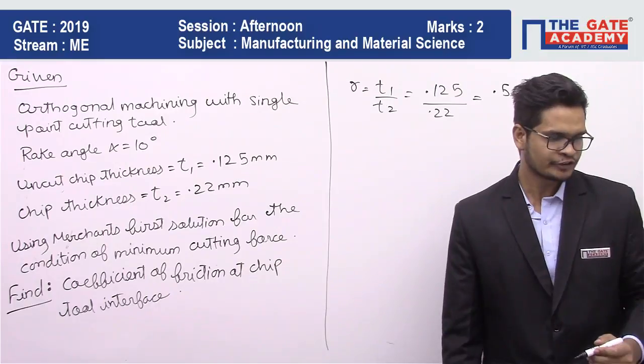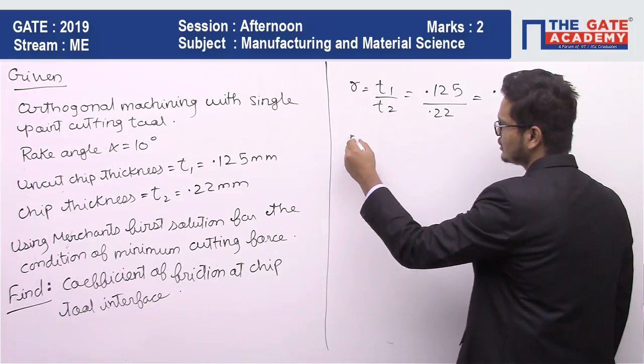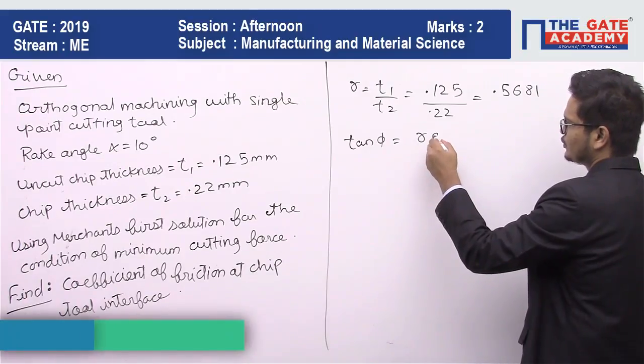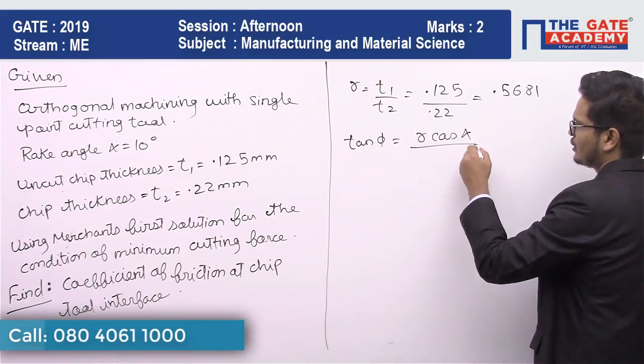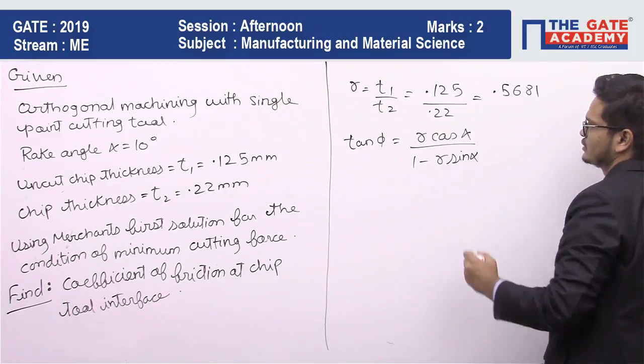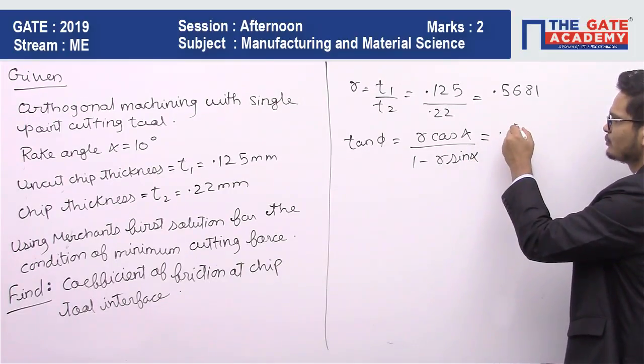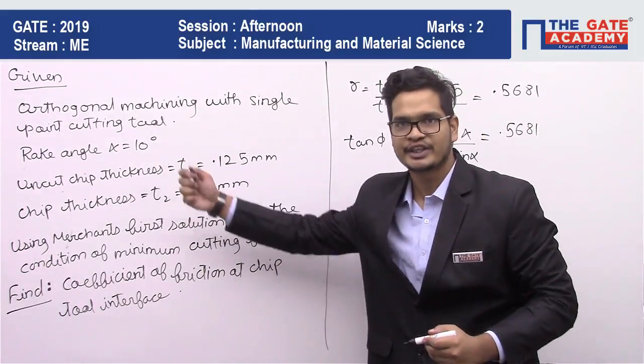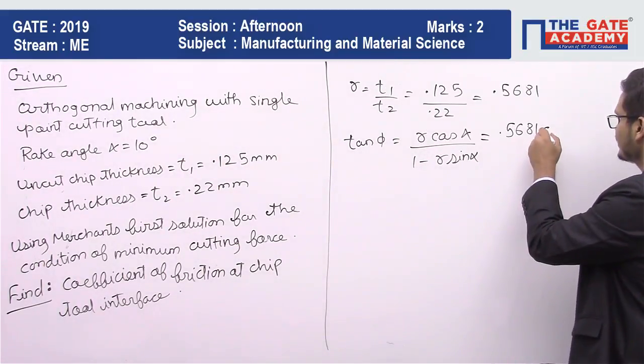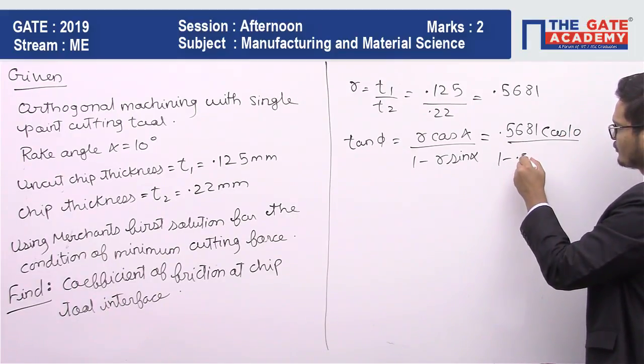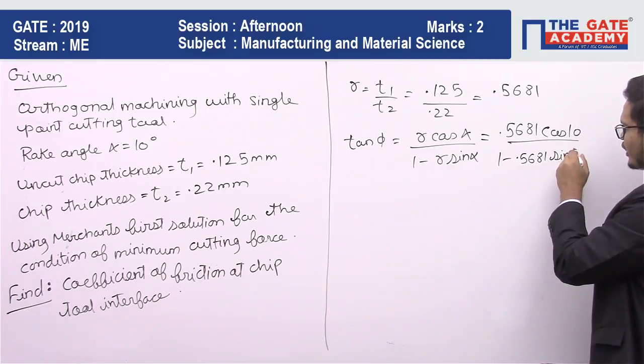Now the expression for shear angle is tan of phi is equal to r cos α upon 1 minus r sin α. So this becomes 0.5681 cos α, α is 10, cos of 10, upon 1 minus 0.5681 sin of 10.